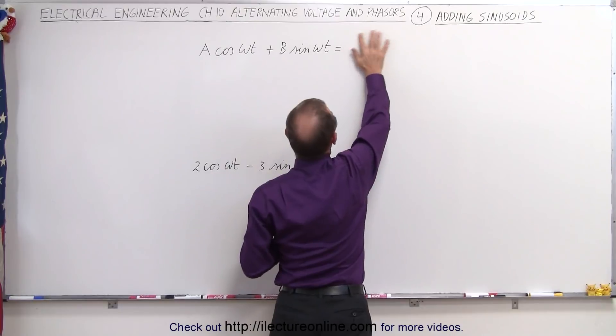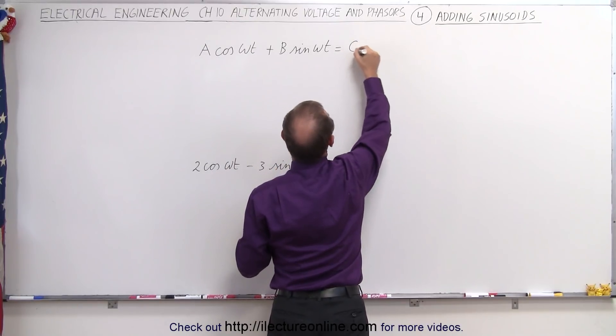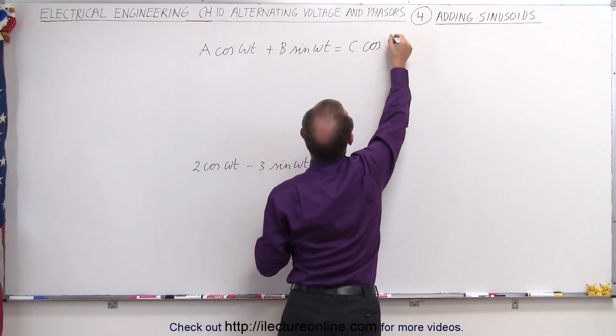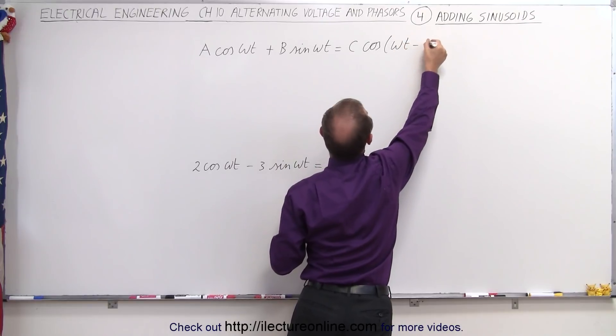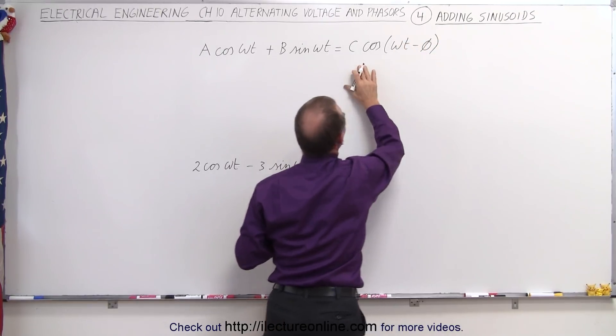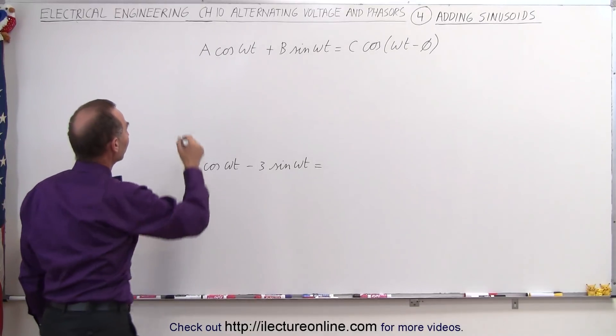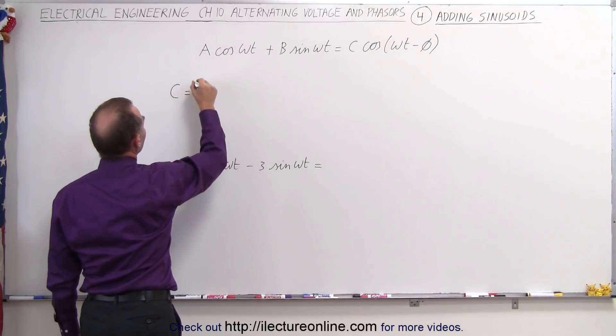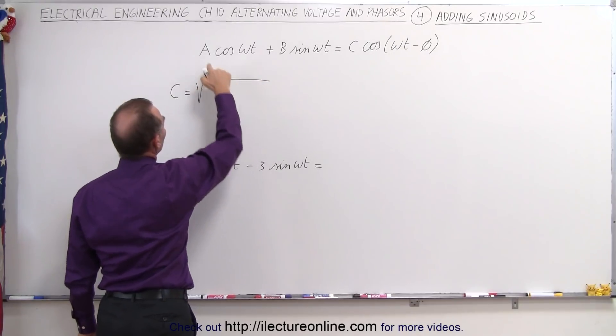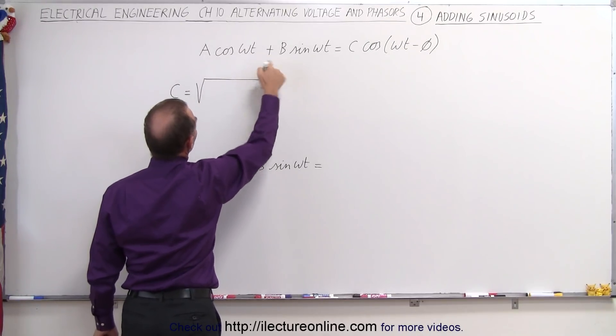Well, it turns out that's going to be equal to C times the cosine of omega t minus the phase angle. Now, the question is, what is C equal to and what is that phase angle equal to? First of all, C can be found by taking the square root of the sum of the squares of the amplitudes of the two functions. So this would be A squared plus B squared.